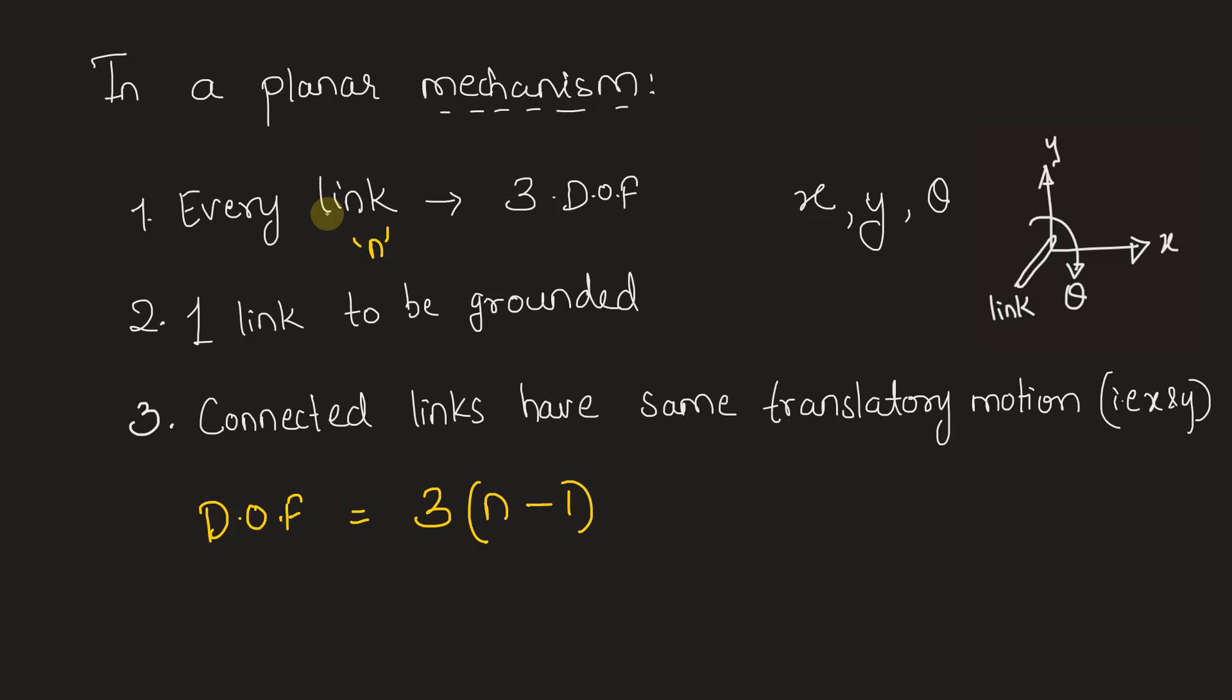So connected links have same translatory motion - that is, in x and y direction they will move together. And that is why we will have to subtract 2 degrees of freedom for each joint. So in this formula we will substitute minus 2 into j, the number of joints.